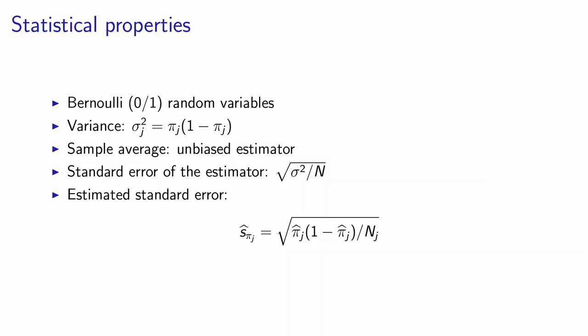The standard error, so basically the average spread around the mean, is calculated as the ratio between the variance and the sample size, and you take the square root of this. So the estimated standard error is obtained by calculating the variance using this formula.